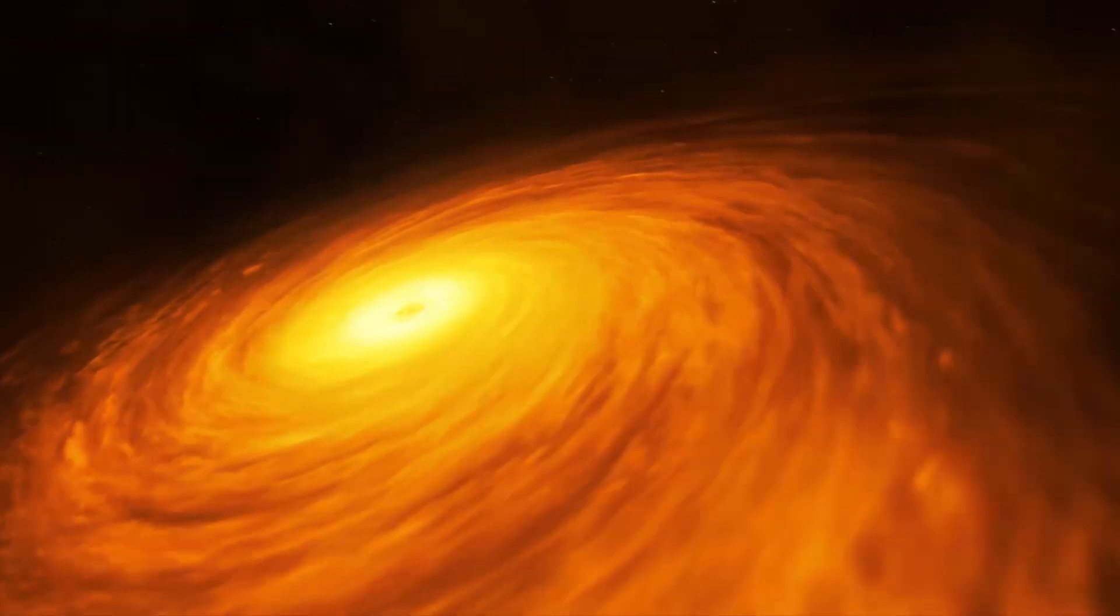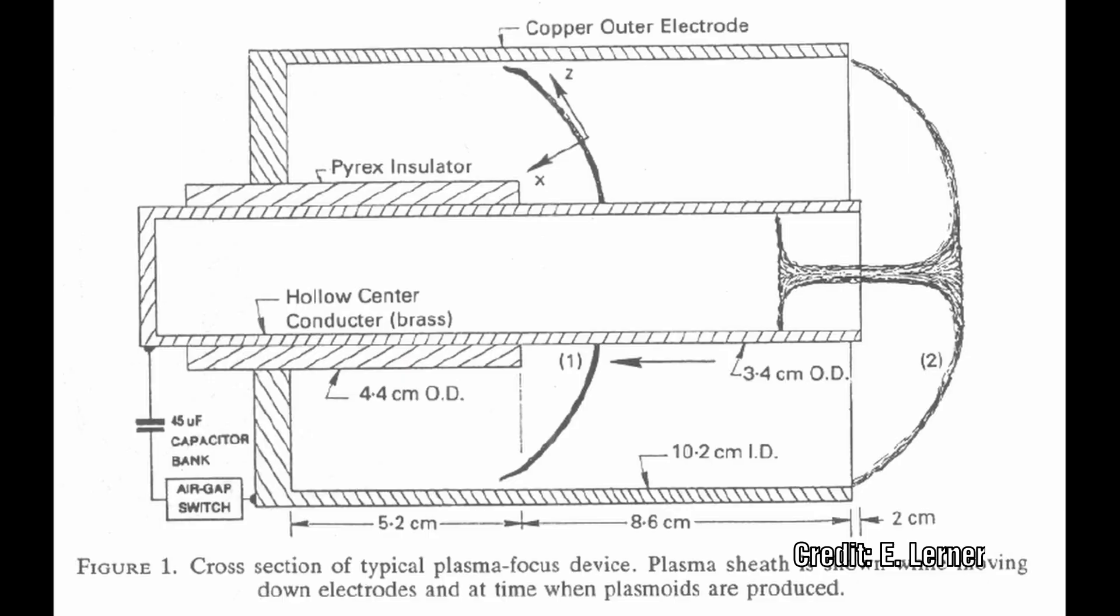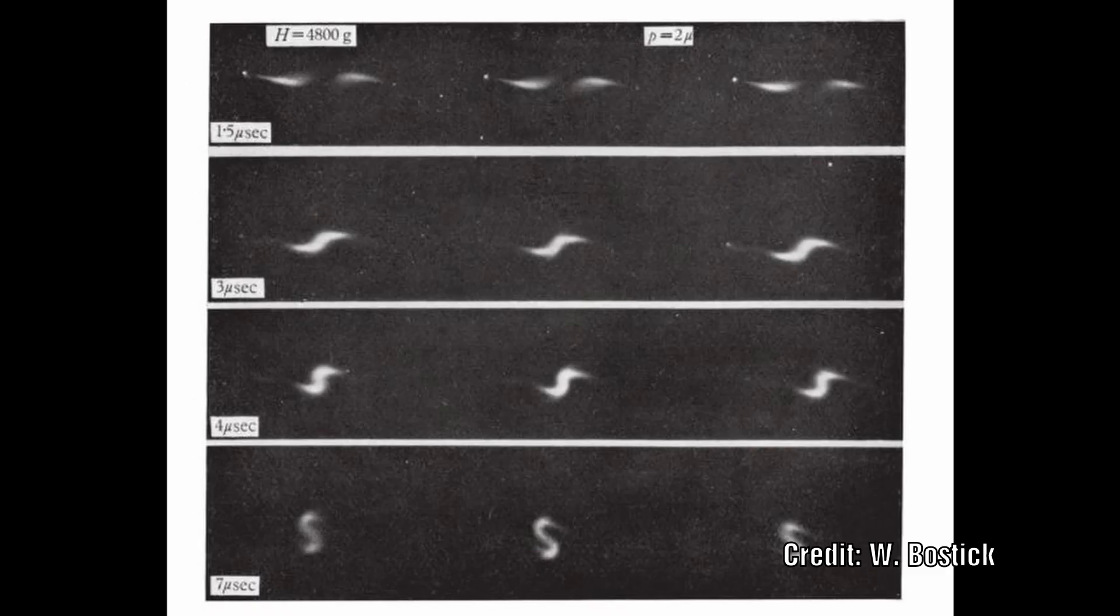The experiments Eric Lerner conducted were based on an initial plasma sheath forming the plasmoid and his equipment was not capable of injecting additional plasma after the formation process. From Bostick's experiments we know that it is possible for plasmoids to join together.